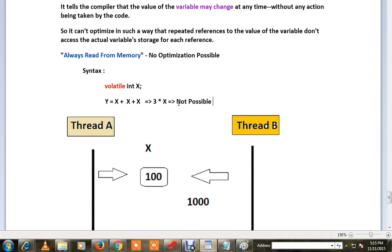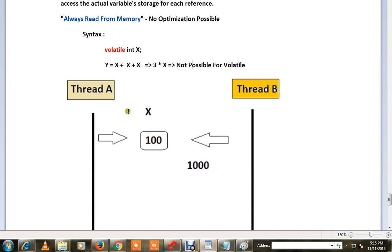It will always read from memory. For example, Thread A has a variable called X and its value is 100. By the time it executes other lines of code, Thread B might have updated the value for X. Thread A might not be aware it has been updated, so it should always read from memory instead of reading from register.